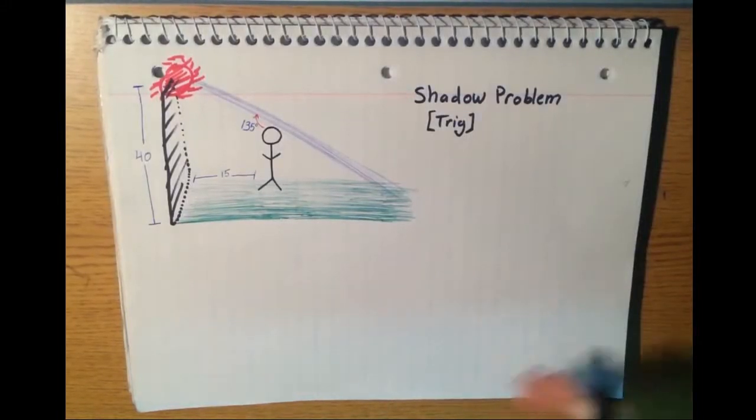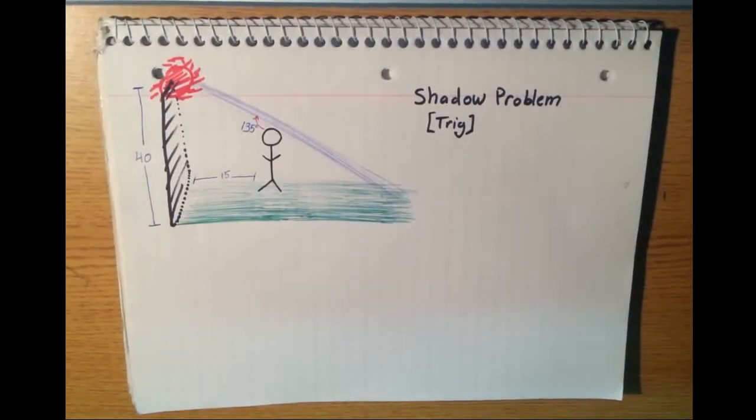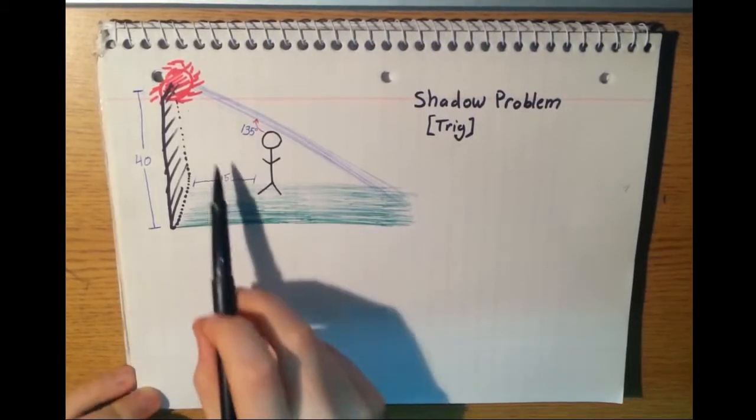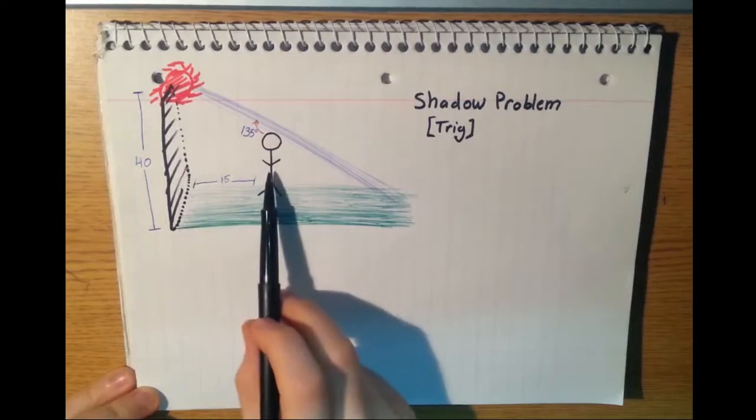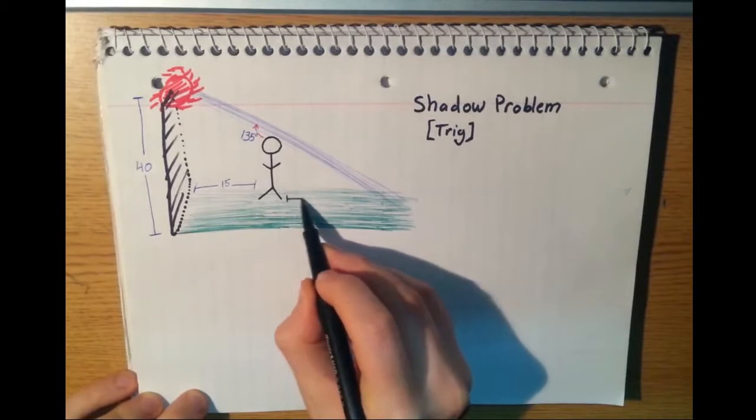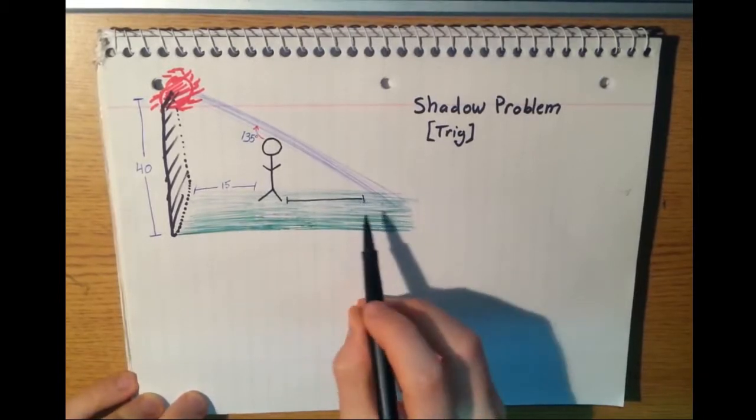Okay, here we've got sort of a classic shadow problem. We're given a man standing in front of a light beam on a wall, and we're tasked with finding the length of his shadow that's cast by the light.